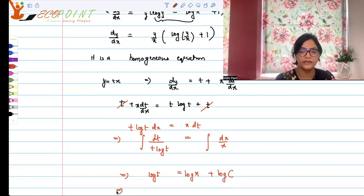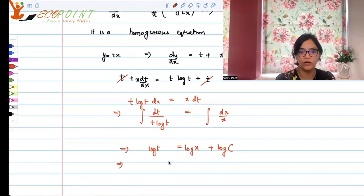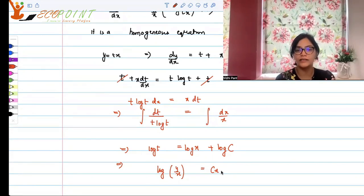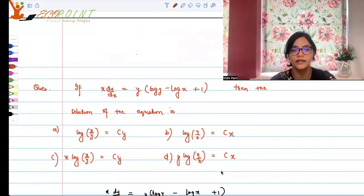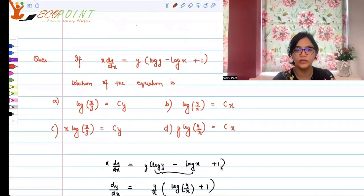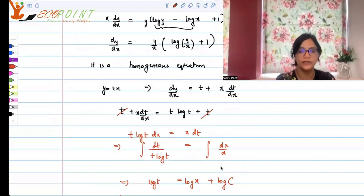And that means what we get is log y by x is equal to cx. So log y by x is equal to cx is the correct answer. And do we have an option? Yes, we do. So option b is the correct.